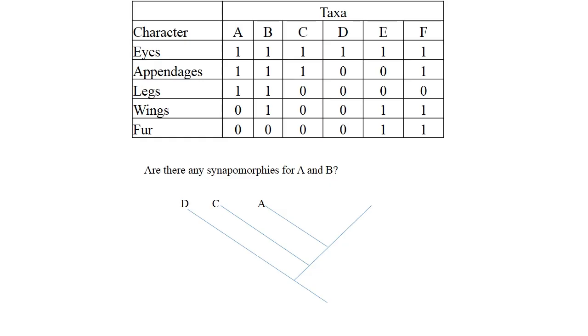Are there synapomorphies for A and B? The answer is yes, legs. So we draw the tree like this and put the synapomorphies on the branch that leads to A and B.